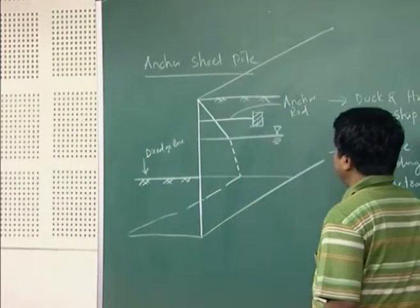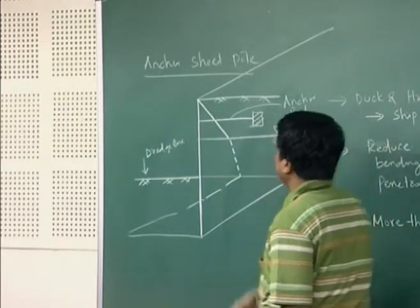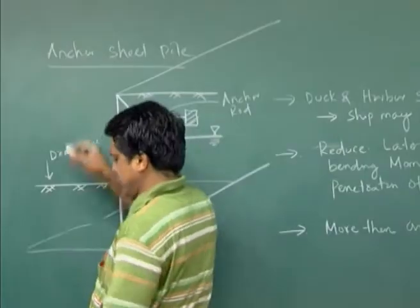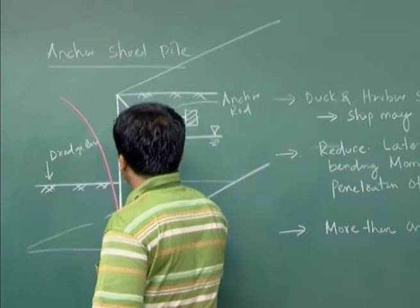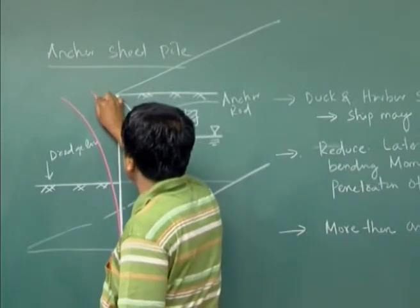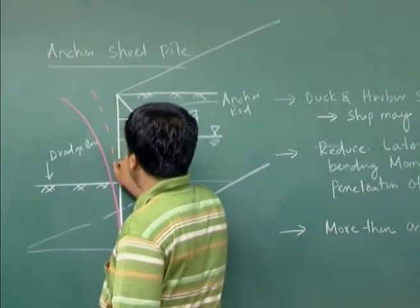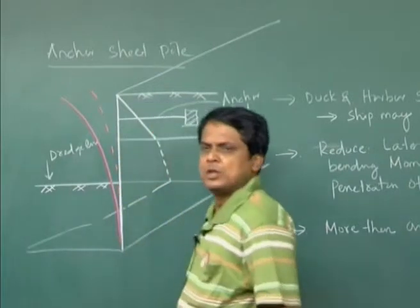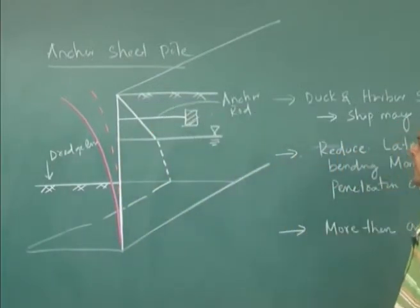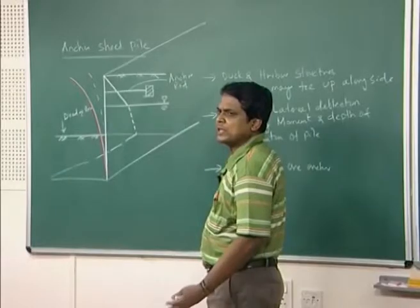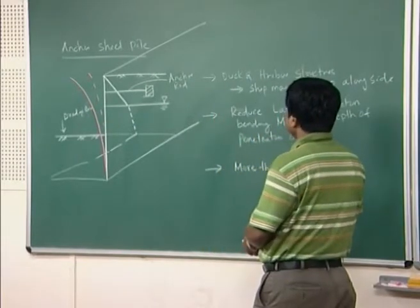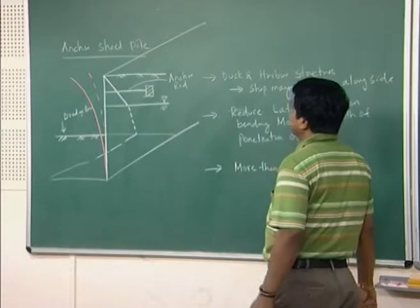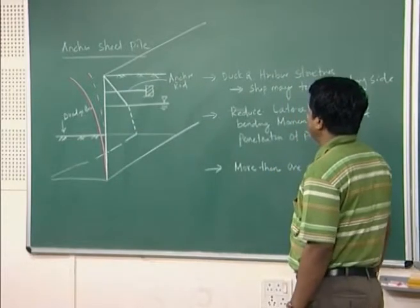For more stability, if you provide the anchor rod, without anchor rod this is your deflected shape, but once you provide the anchor rod the deflection will be drastically changed. That means the risk of failure can be avoided. Also, bending moment is reduced by providing the anchor rod.